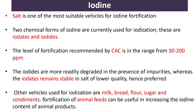Salt is one of the most suitable vehicles for iodine fortification. Two chemical forms of iodine are currently used for iodization: iodates and iodides. The level of fortification recommended by Codex Alimentarius is in the range of 80–200 ppm. Iodides are more readily degraded in the presence of impurities, whereas iodates remain stable — hence iodates are preferred in salts of lower quality.